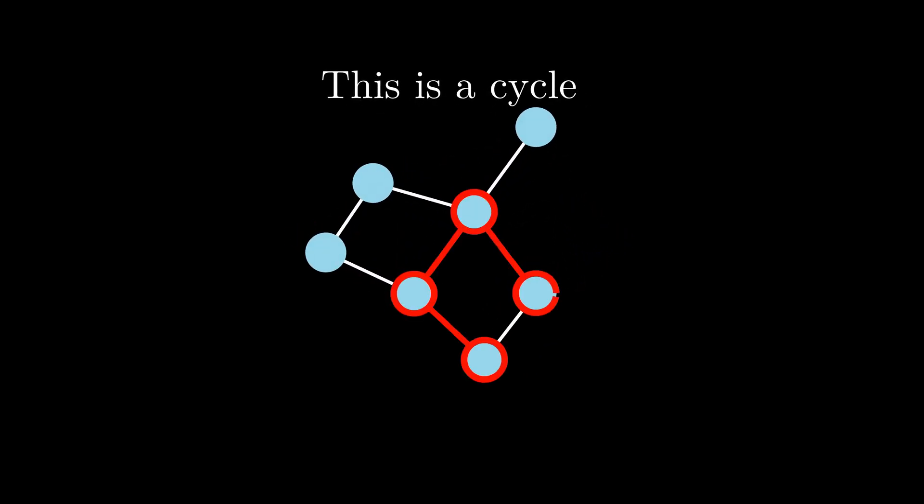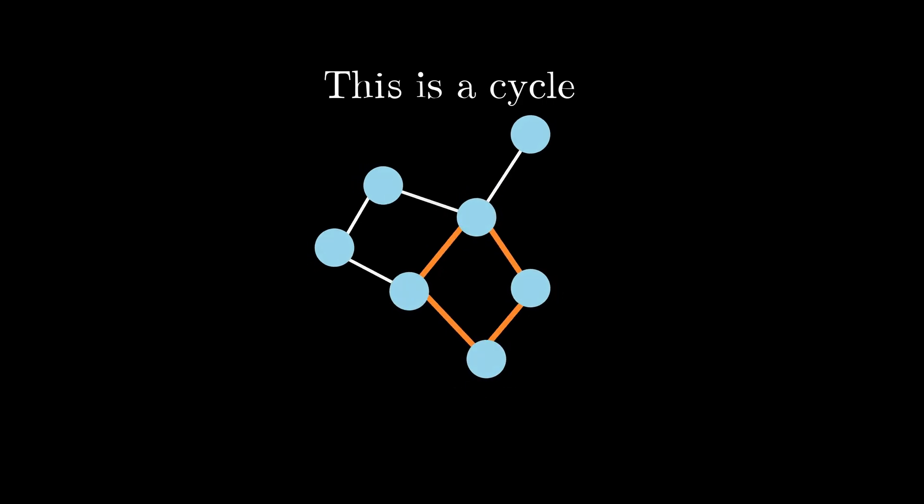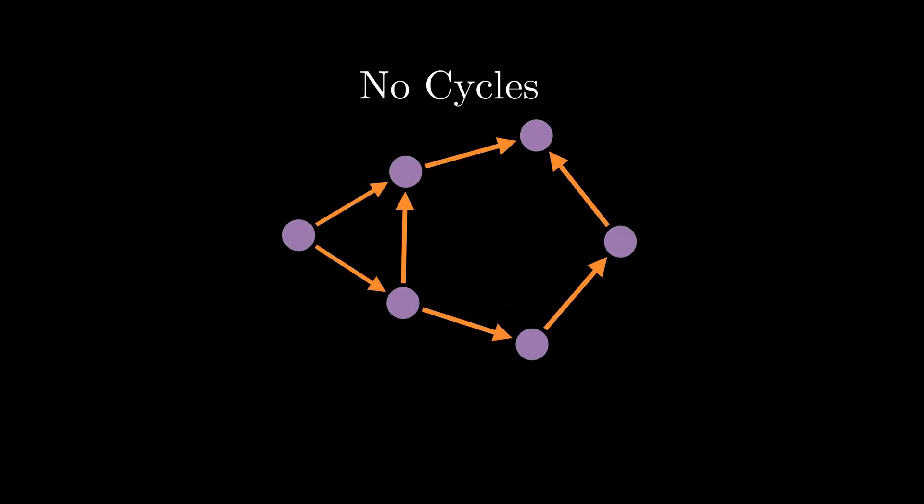And this is what I mean by a cycle. A cycle is just a path that starts from one node and ends at that same node. As you can see here, our starting node is the same as our ending node in this path. So no cycles means that we can never get back to a node once we've left it.